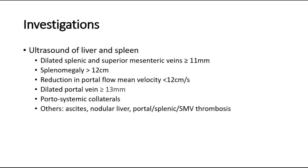Investigations that can be done include an ultrasound of the liver and spleen. In cases of portal hypertension, findings include a dilated splenic and superior mesenteric vein, splenomegaly, a reduction in the portal flow mean velocity, a dilated portal vein, and portal systemic collaterals. Other findings include ascites, a nodular liver, or thrombosis in the portal vein, splenic vein, or superior mesenteric vein.